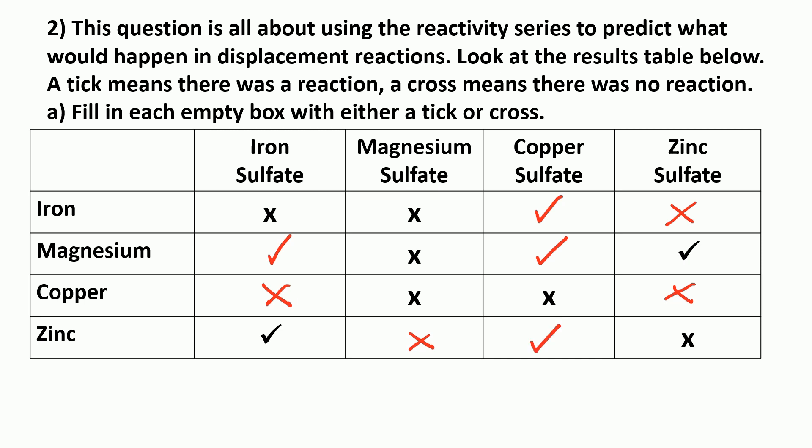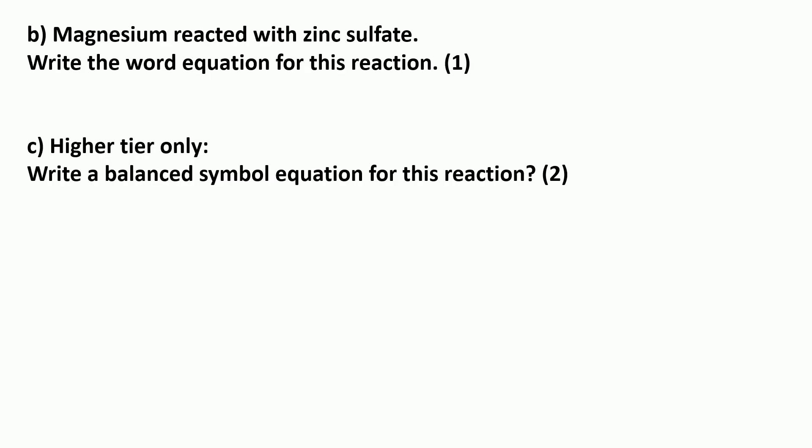Question B. Magnesium reacted with zinc sulfate. Write the word equation for this reaction. So the two reactants go on the left, magnesium and zinc sulfate. And we can see here that magnesium is more reactive than zinc, so it pinches the sulfate.